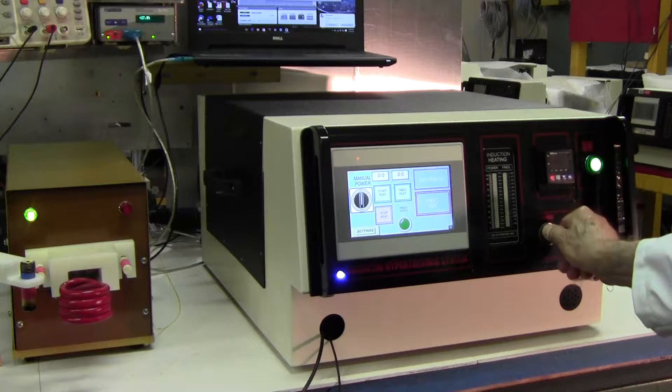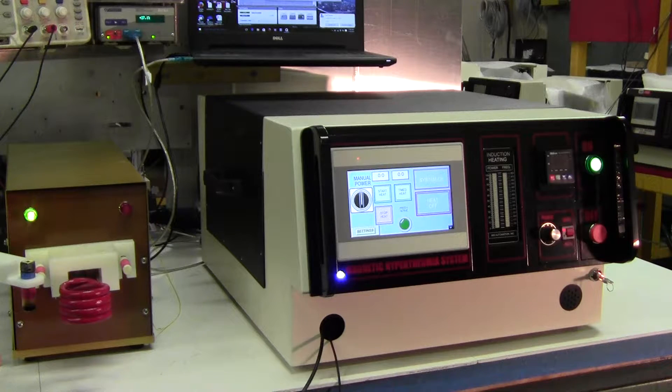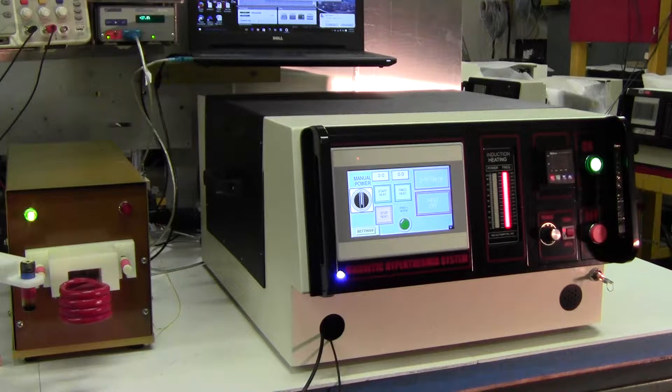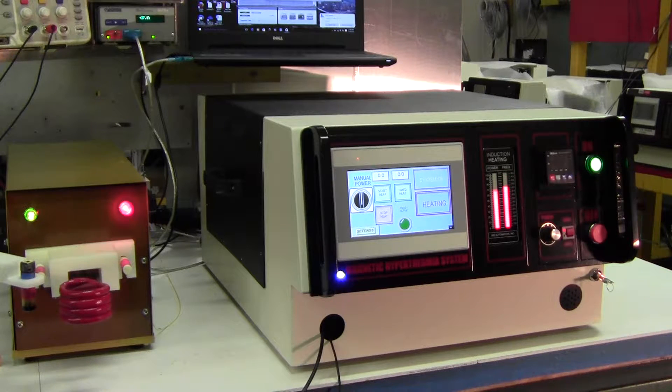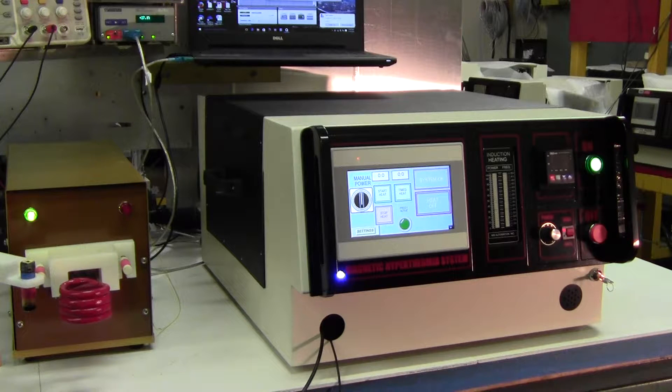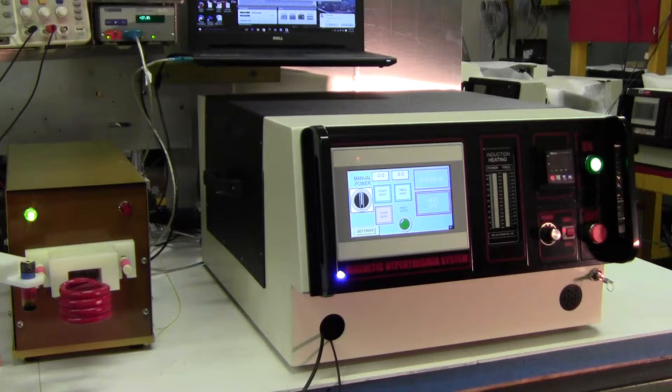Now I'll turn the power full power. I stepped on the foot switch again and we go to full power. Now that's manual control. As you can see, the machine operates at the power level that you set with the control knob.